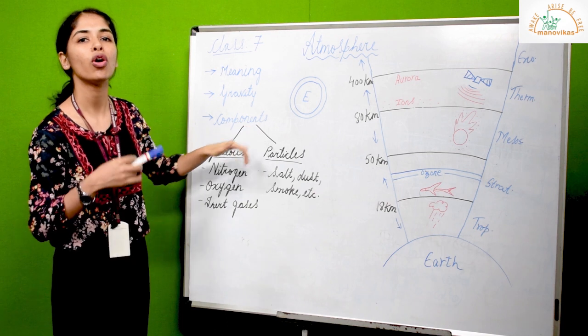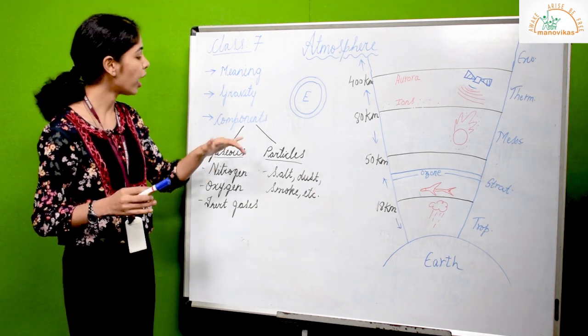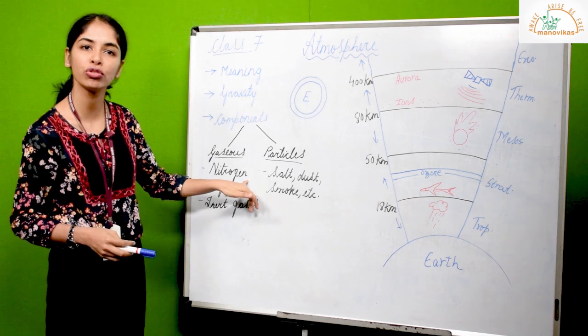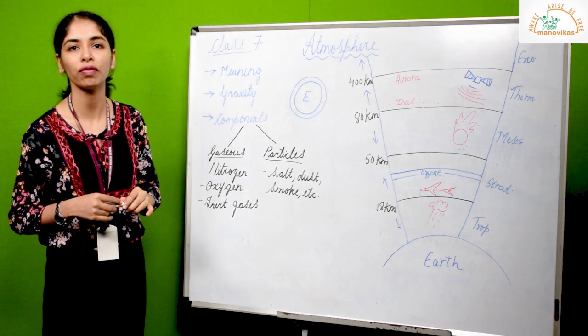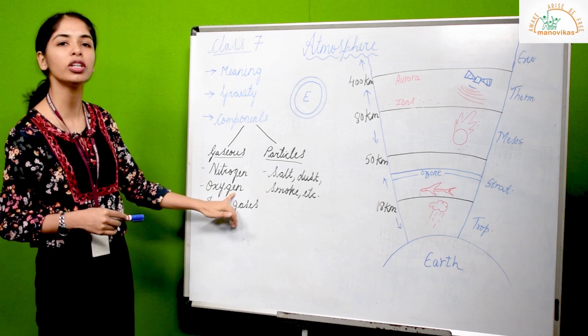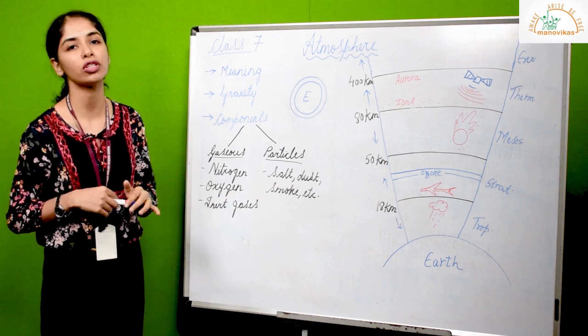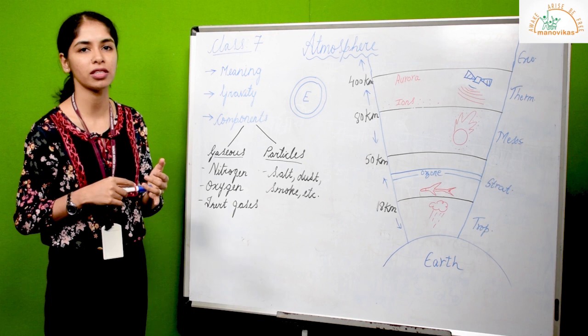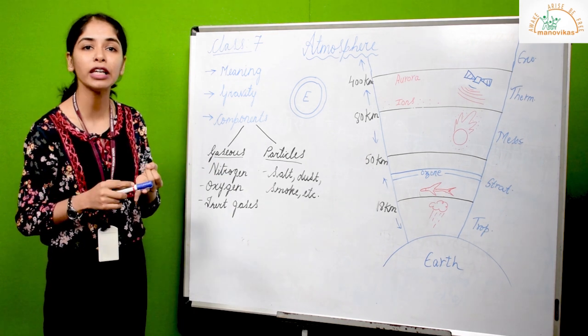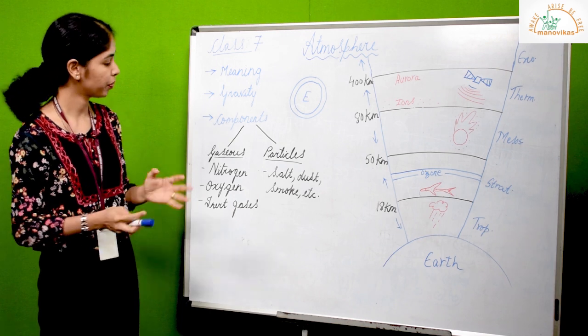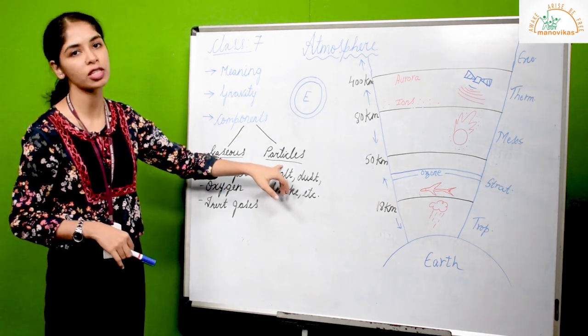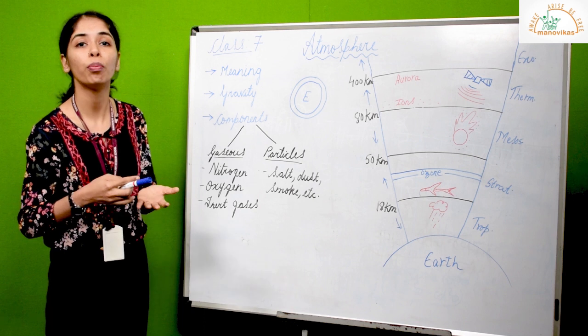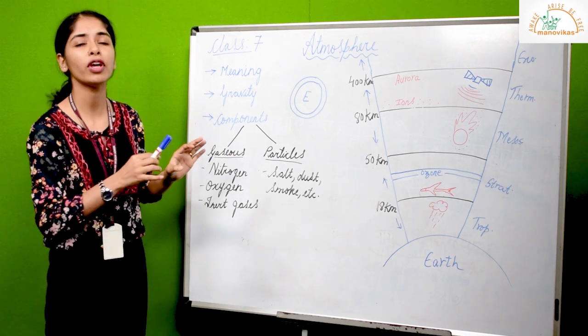We know the meaning of atmosphere. Now we should know what are the major components of the atmosphere. Atmosphere is largely made up of different types of gases, the major ones being nitrogen which makes up about 78% of the atmosphere, followed by oxygen which takes up about 21%, and the remaining 1% is taken up by some inert gases like hydrogen, helium, carbon dioxide, etc. Besides these gases, there are also other particles suspended in the air like salt particles, dust particles, ash, smoke, pollen grains, etc.